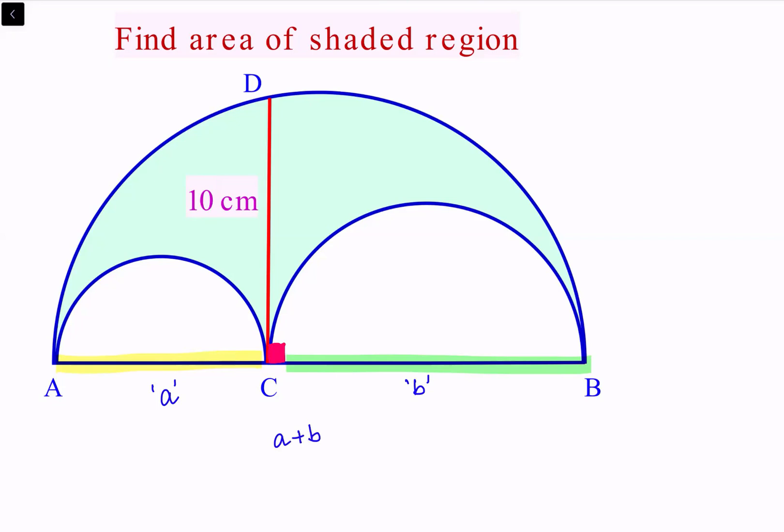For the bigger circle, let's assume the center is lying somewhere here and the center is O. This is the center of the bigger circle. So let's join the length DO.